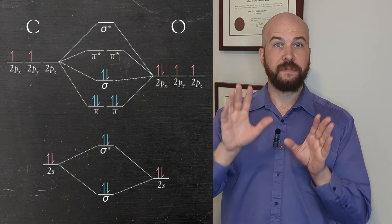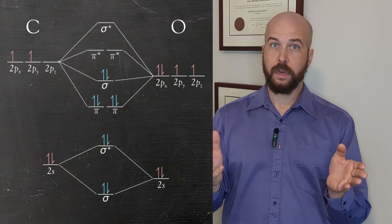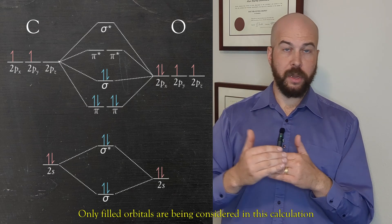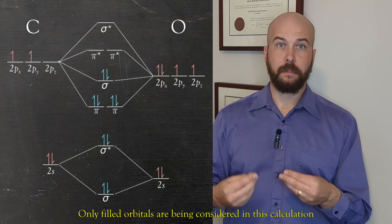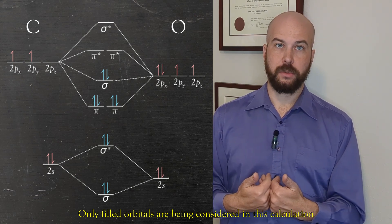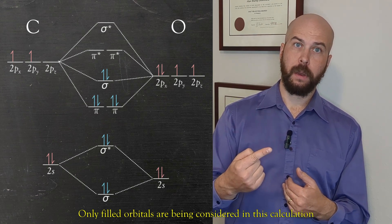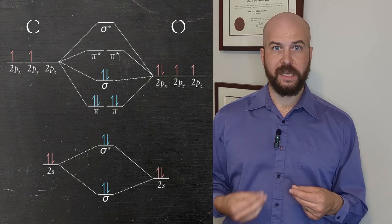That is all of our electrons accounted for. To calculate the bond order we add up the number of bonding orbitals of which there are 4 and we subtract the number of antibonding orbitals of which there is 1. So the bond order is 3. Molecular orbital theory predicts that carbon monoxide has a triple bond between the carbon and the oxygen.